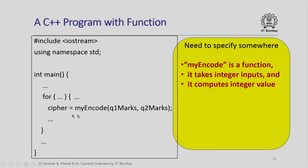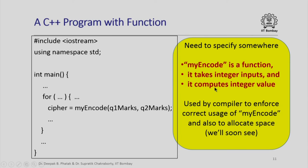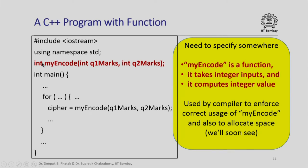To use my_encode in our program we need to specify that it is a function, that it takes integer inputs, and that it computes integer values. This is necessary so the compiler can enforce correct usage — we do not want to provide a string as input to my_encode — and also to allocate space for the return value and for what is called the activation frame, which we will see in a later lecture. Just as we declare variables, we declare that my_encode is a function whose return value is of type int, taking two arguments q1_marks and q2_marks, both of type int.